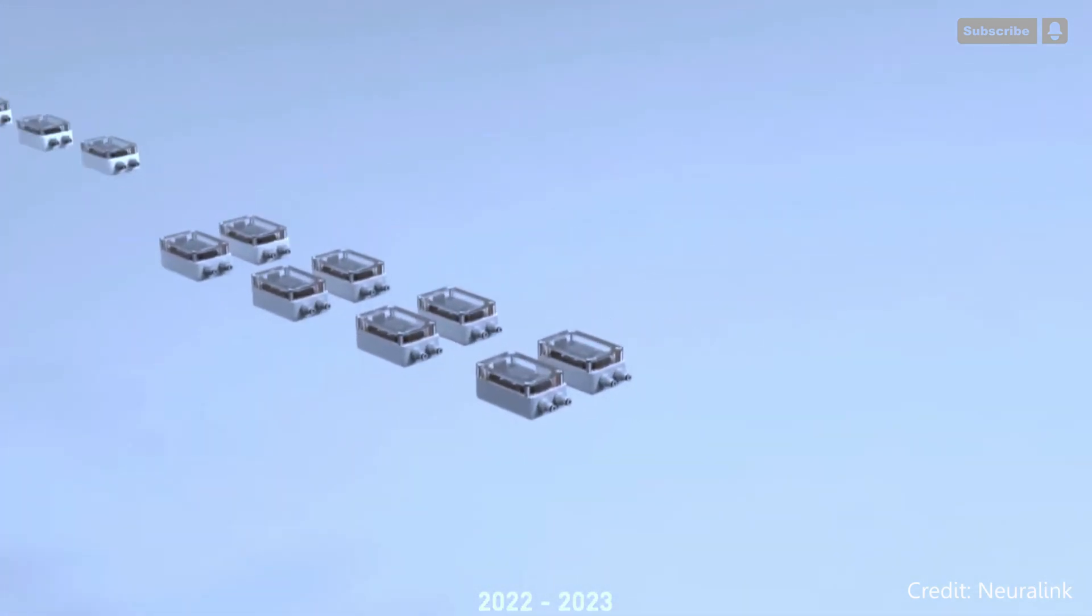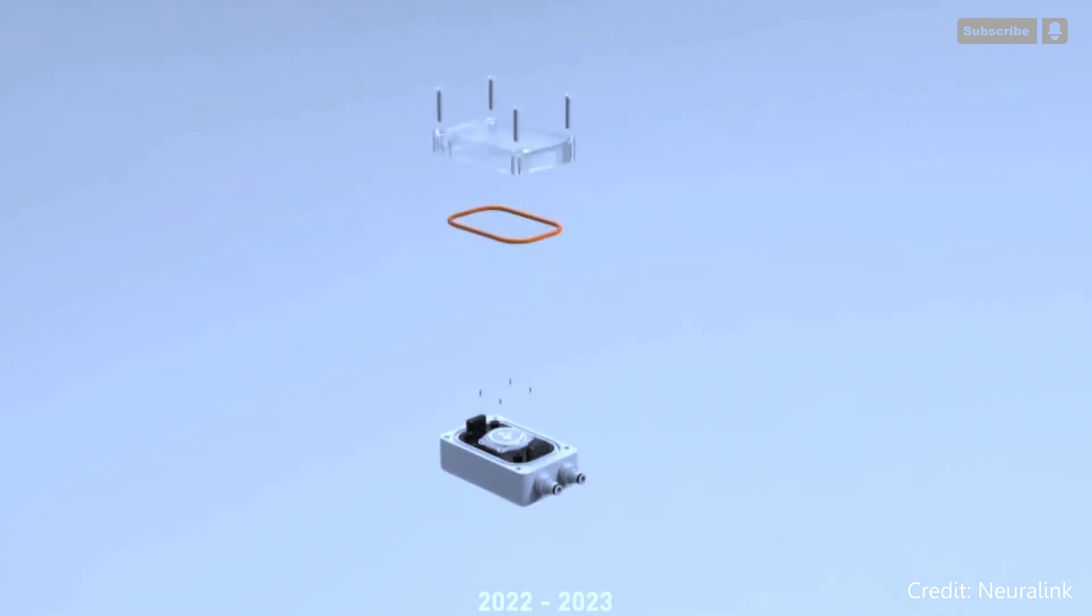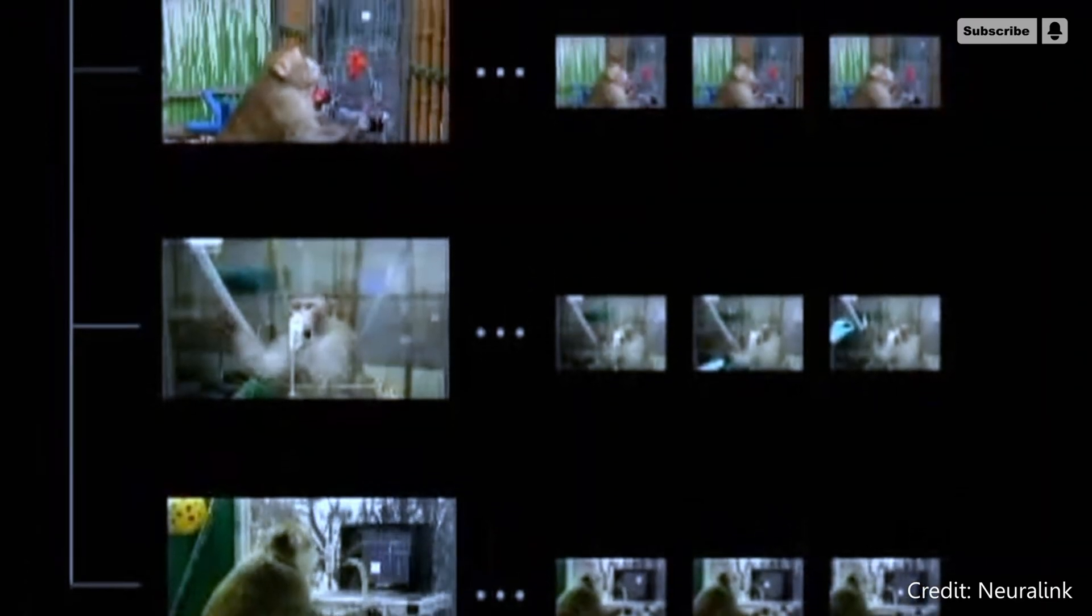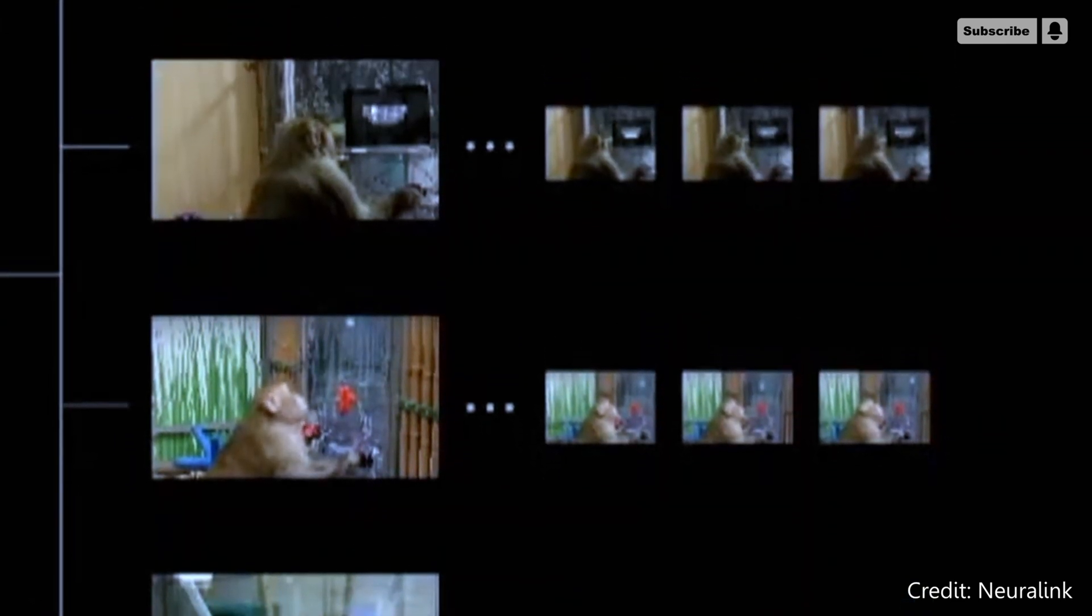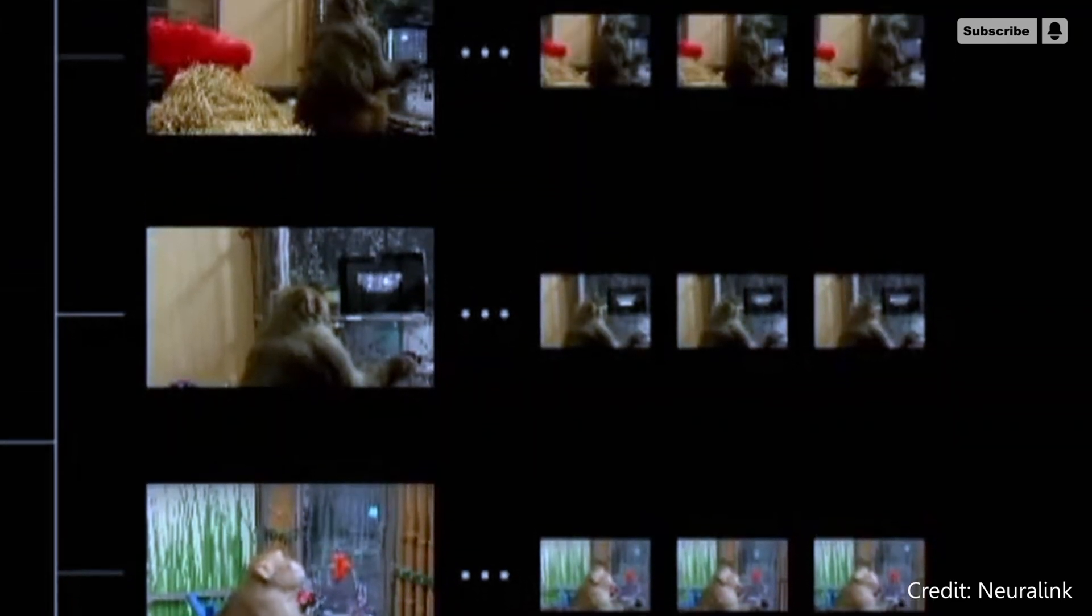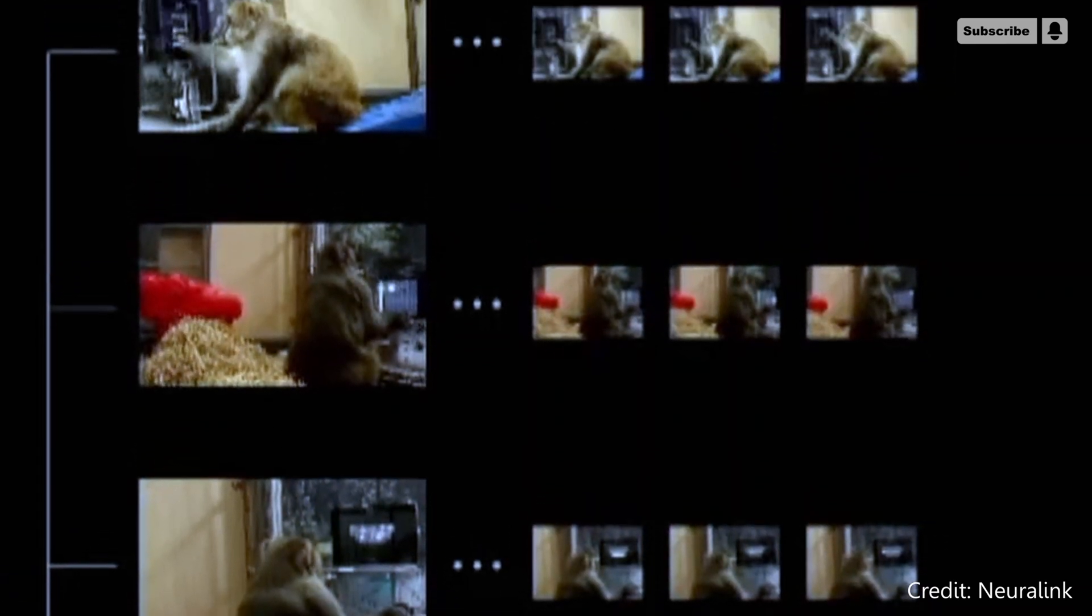The potential of Neuralink's next phase of technology is to help blind patients regain their vision. Two monkeys already had the N1 implanted into their visual cortexes for testing purposes, and the BCI devices were able to capture the receptive fields of their vision.